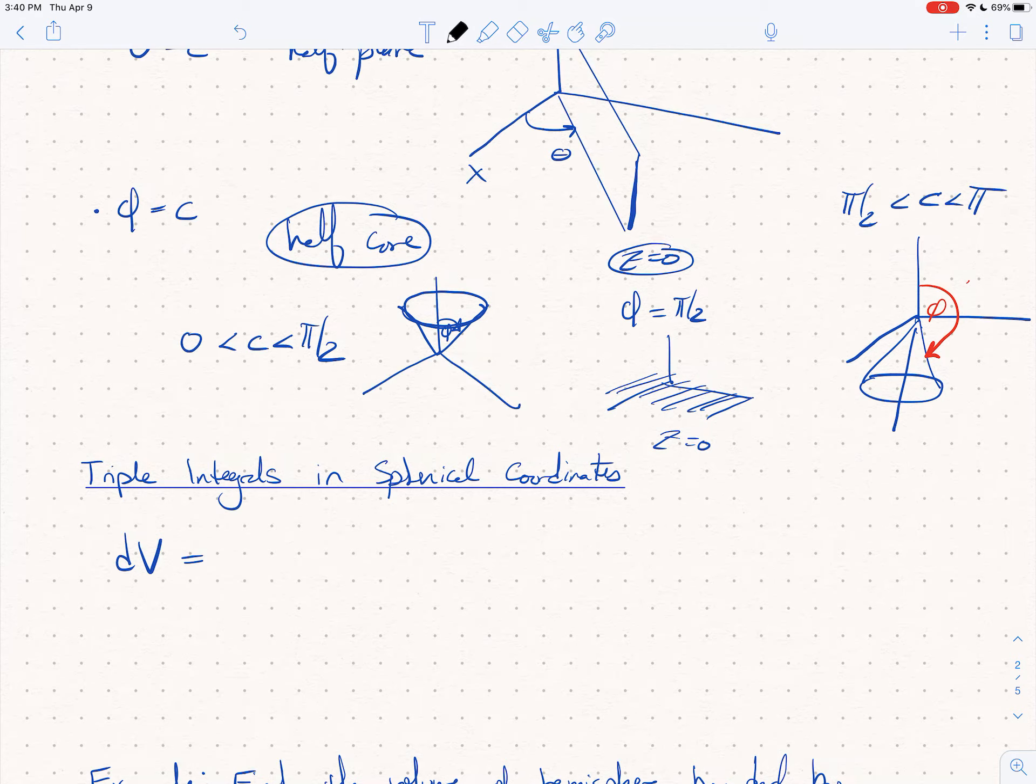When you want to convert an integral from Cartesian into cylindrical coordinates, the dV, the little piece of volume that we're cutting up that used to be a little piece of rectangular volume, becomes a little chunk of, a little piece of a sphere. And the conversion is dV is rho squared, sine phi, d rho, d phi, d theta.